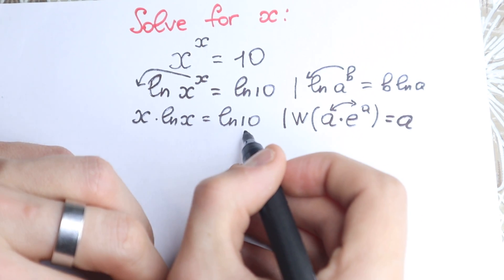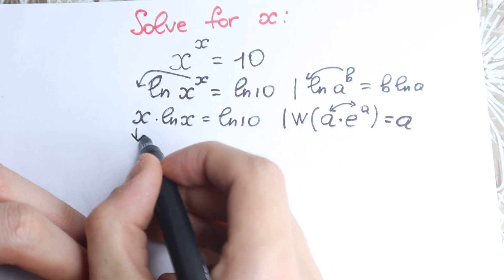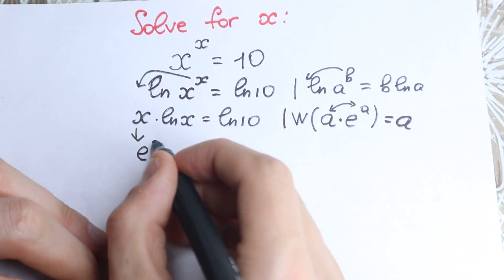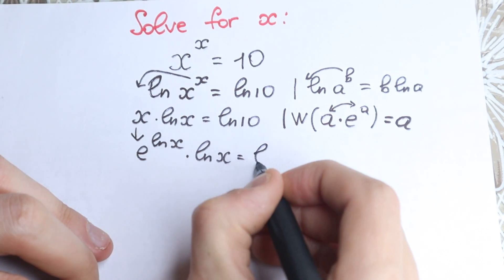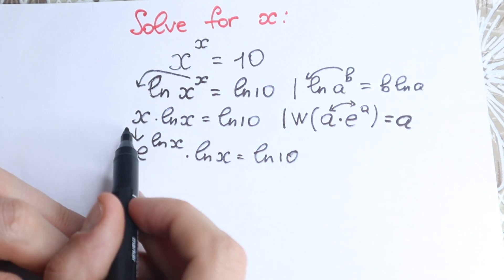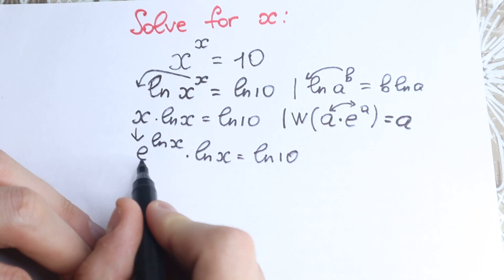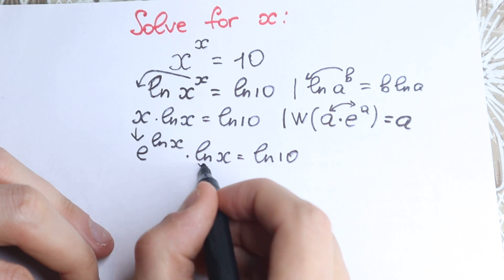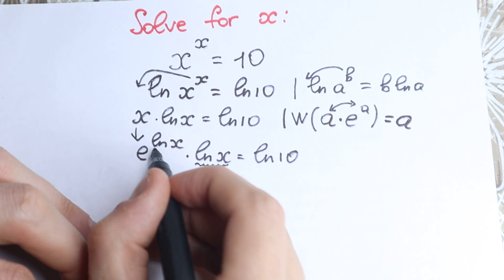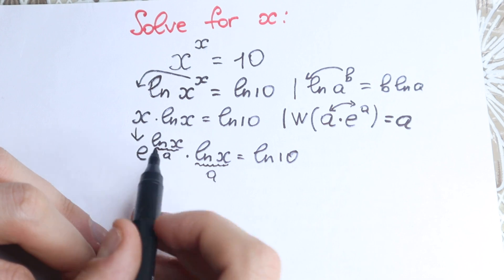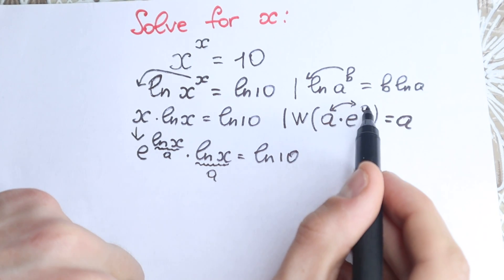On the right hand side we have a constant, so it's harder to create the Lambert W function there. But on the left hand side we have a really great expression, because instead of x we can write e to the power natural log x. So we have e to the power natural log x, times natural log x, equal to natural log 10 — and if we look closely, natural log x is our a, both here and as the power of e, giving us a times e to the power a.